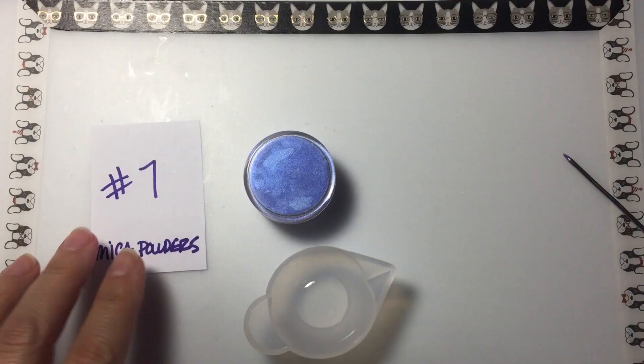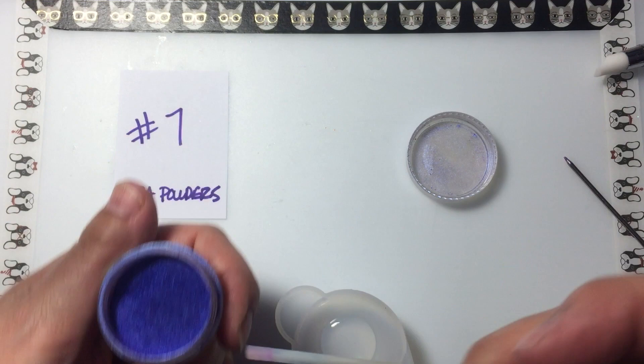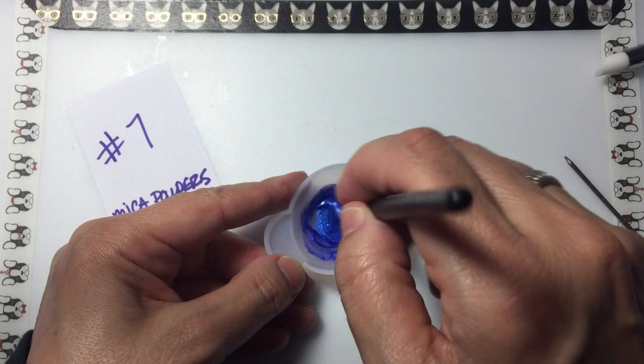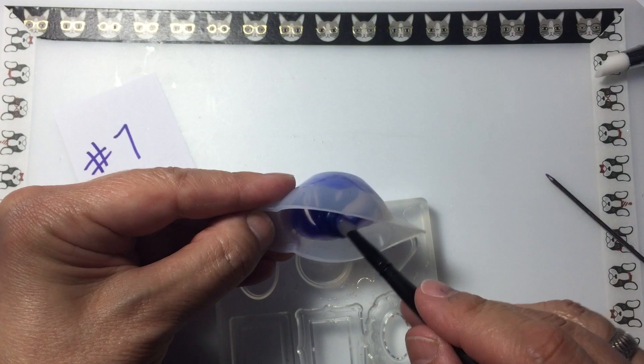The seventh method for coloring resin that I'm going to show here is mica powders. With mica powders, make sure they're very finely ground. Otherwise, you're going to get little chunks of mica in your resin. The other thing that's kind of cool about these is you can get some really neat swirly patterns.